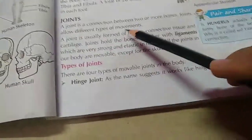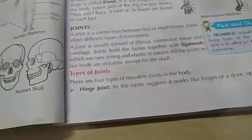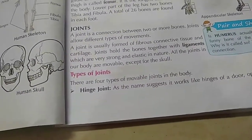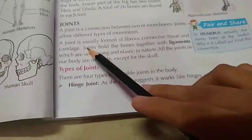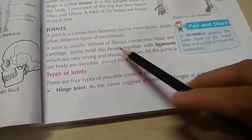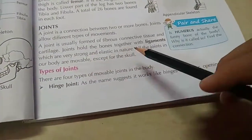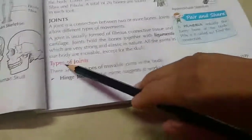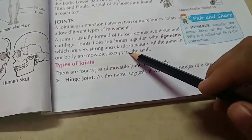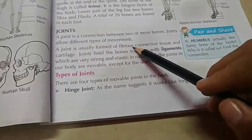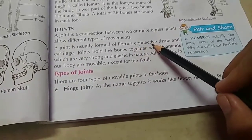A joint holds the bones together with ligaments, which are very strong and elastic in nature. All the joints in our body are movable except the skull. Joints are generally made of fibrous connecting tissue.